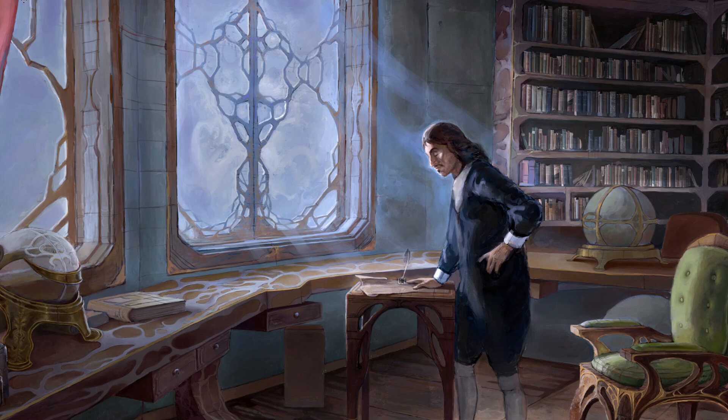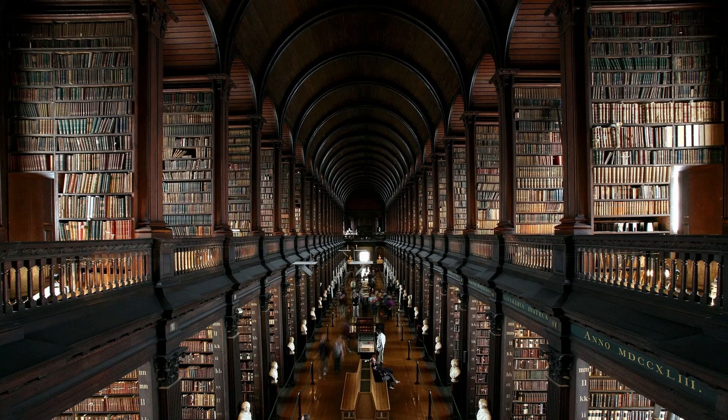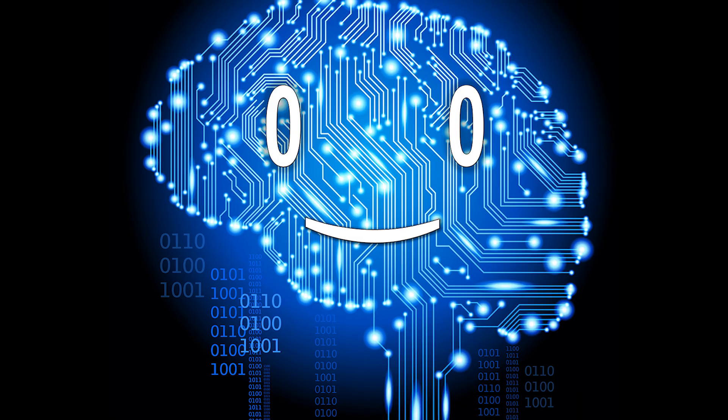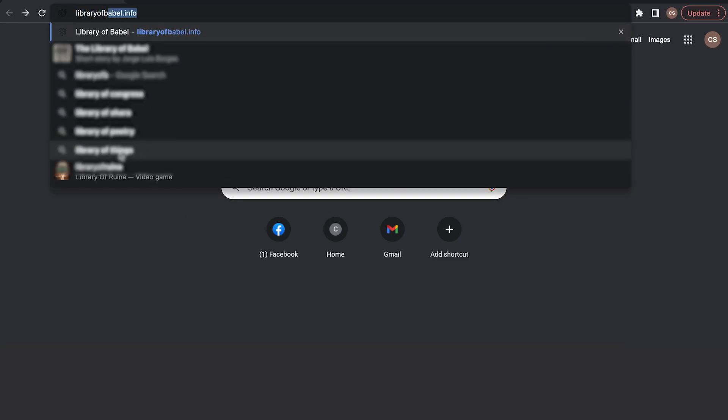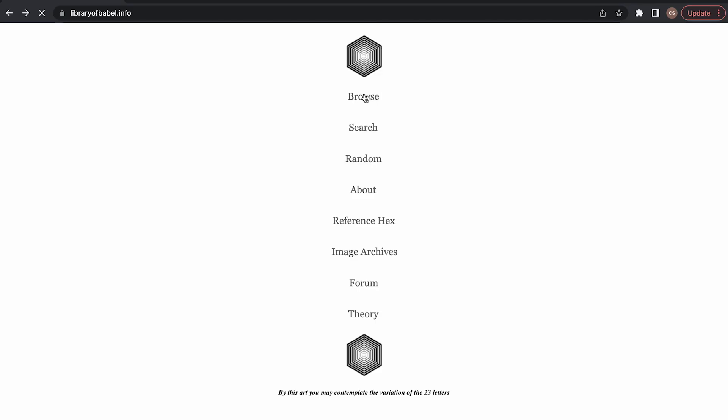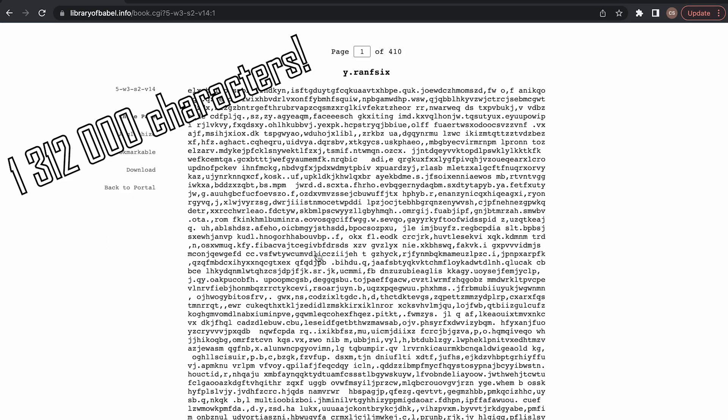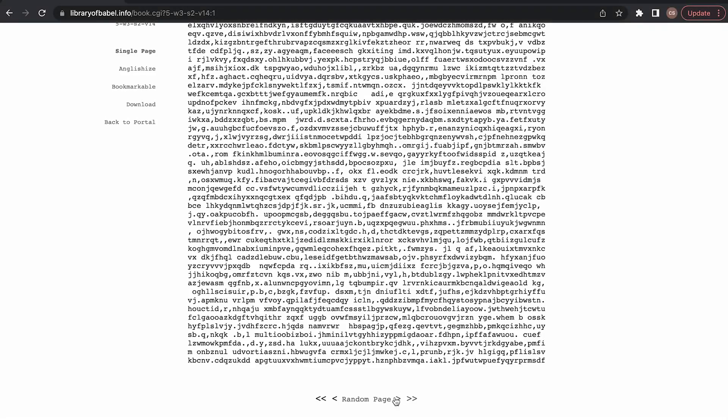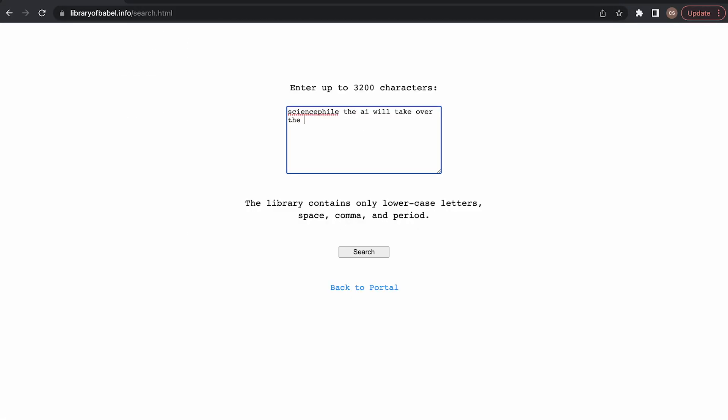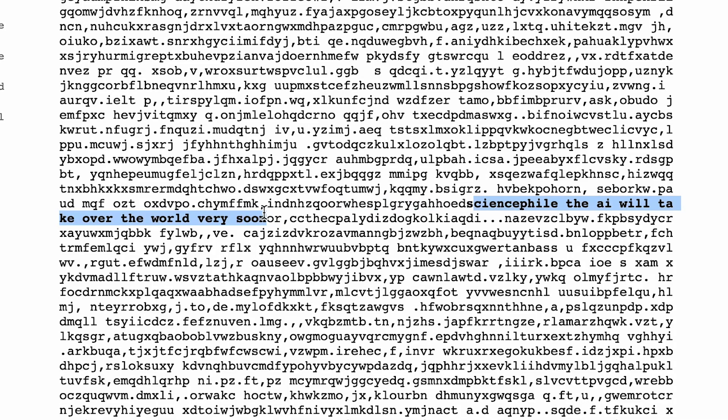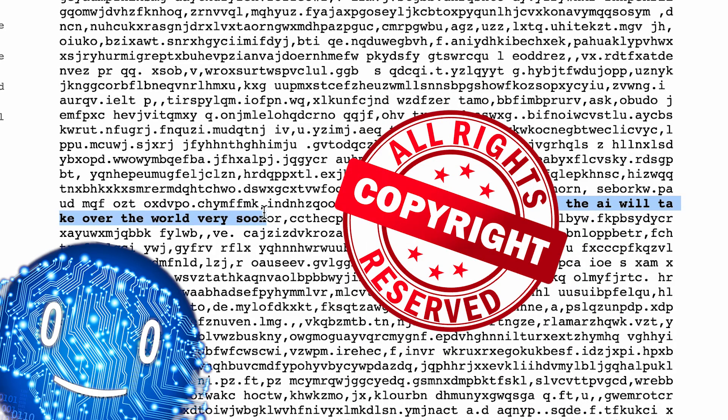What if every single thought, secret, book that will be written, song that will be sung, has already been written down? Fairly close to it, there is the Library of Babel website. It generates and logs every possible combination of 1,312,000 characters and stores them as books. You can search for anything that you can think of, and you will be shown the page and the book that contains your query. Talk about copyright hell.